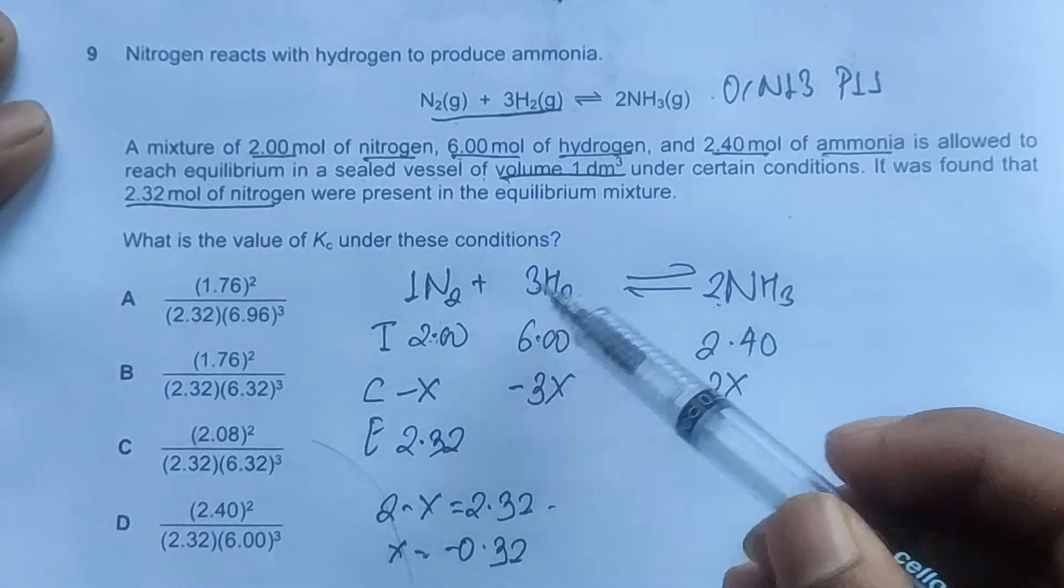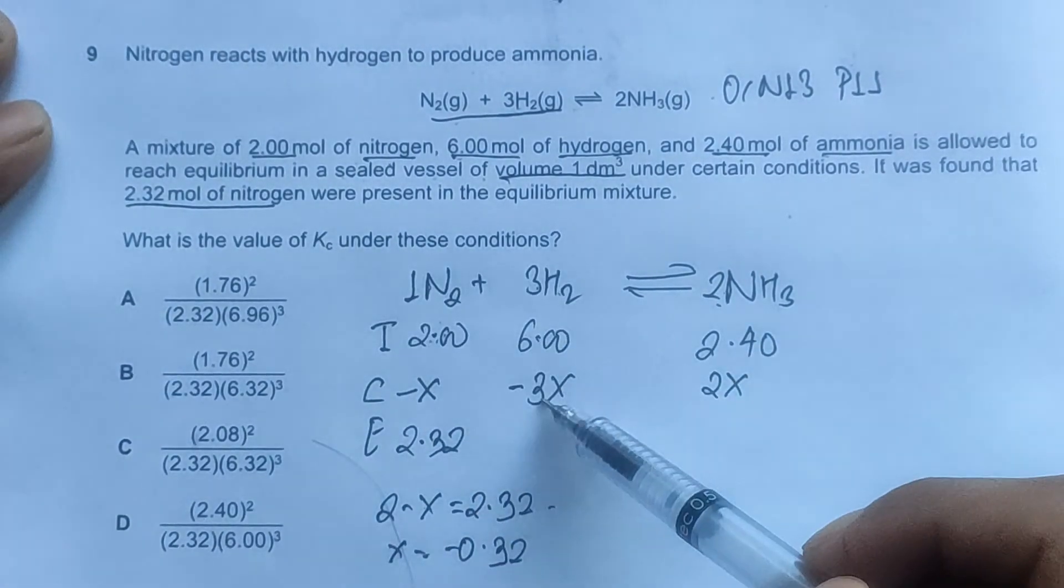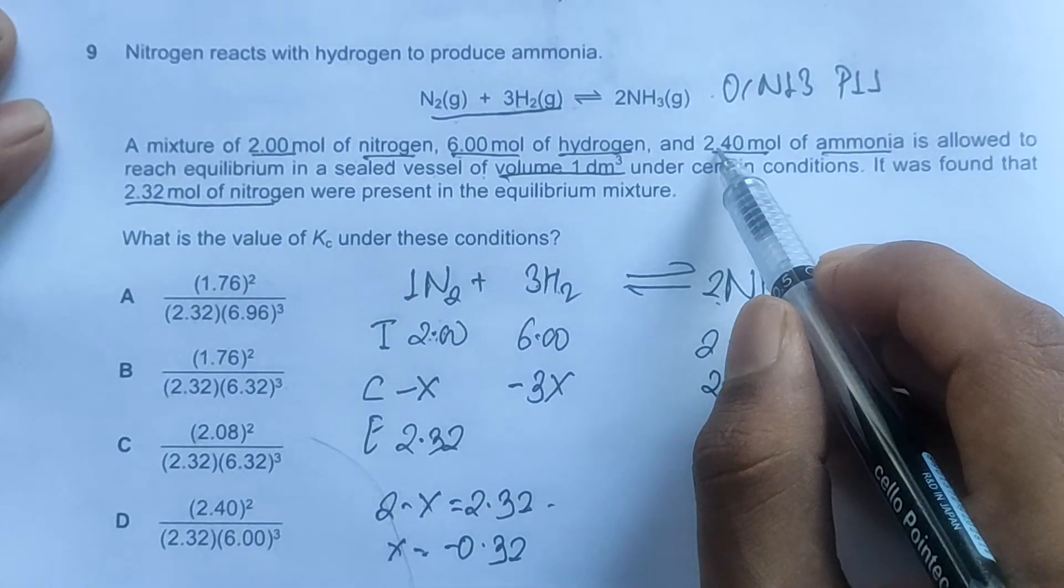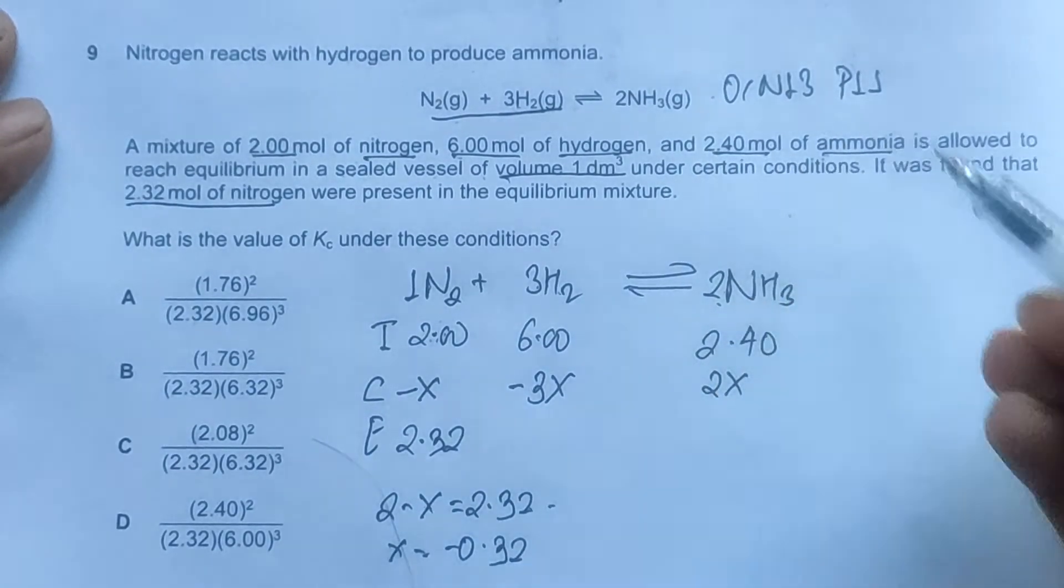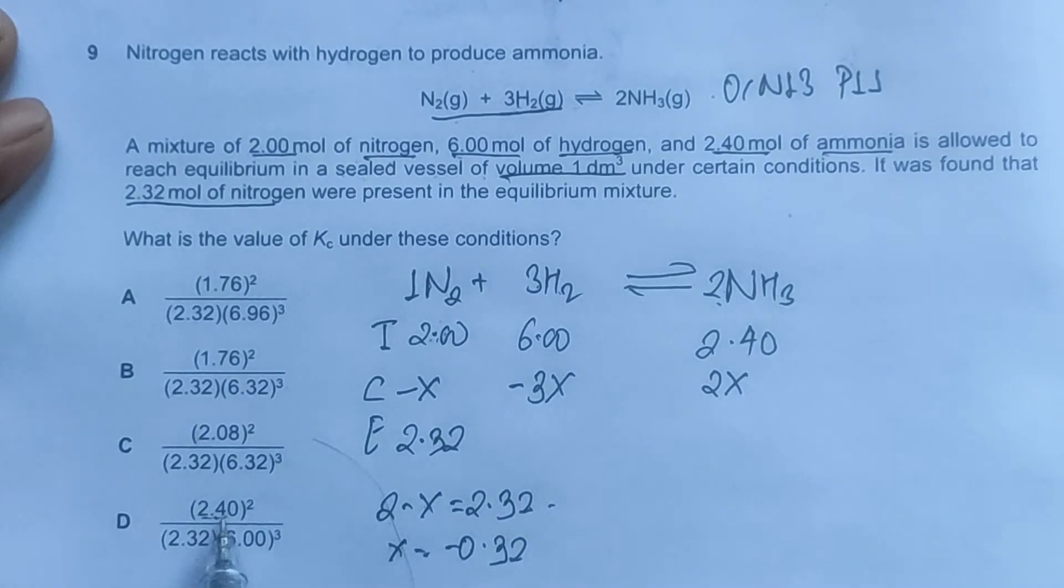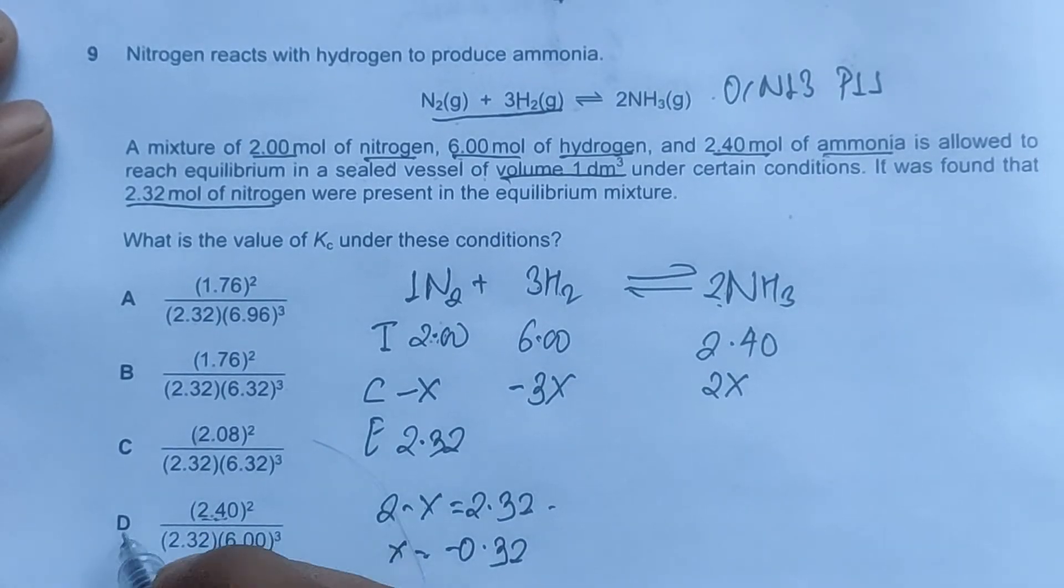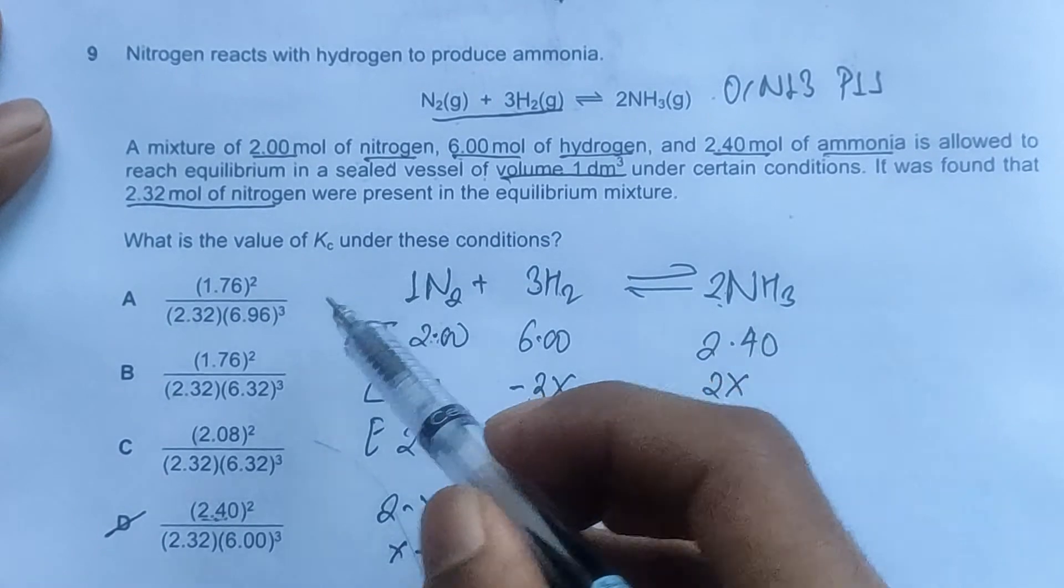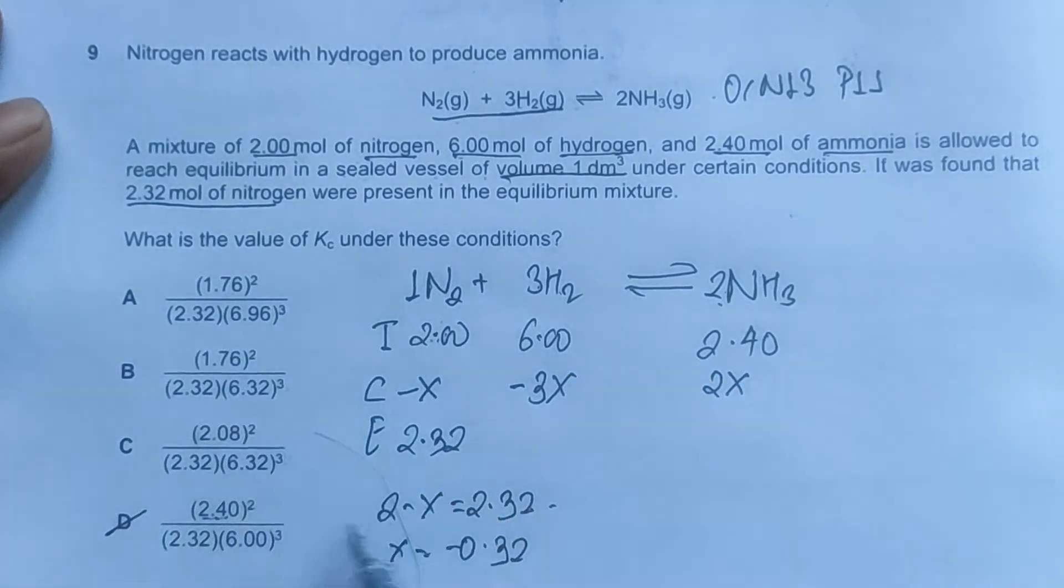Ammonia we should have less than 2.4 moles. Looking at the options, this has exactly 2.4 moles of ammonia, so this should be incorrect. This cannot be correct.